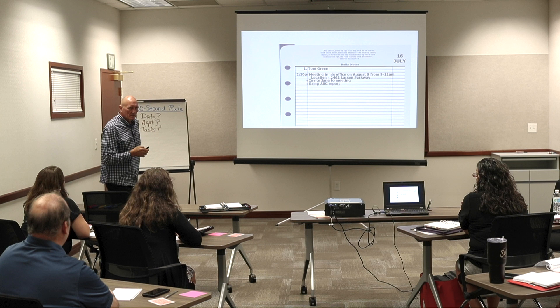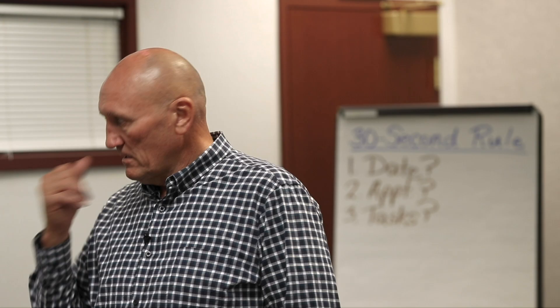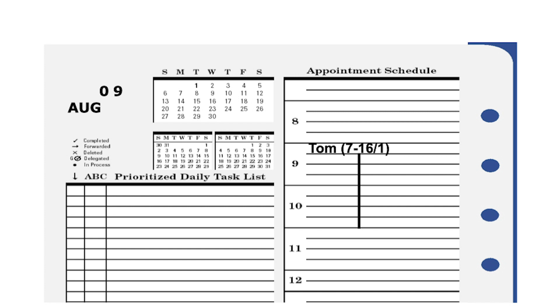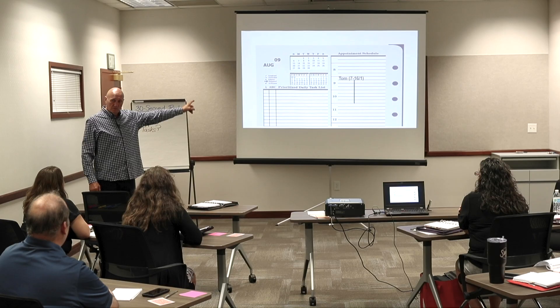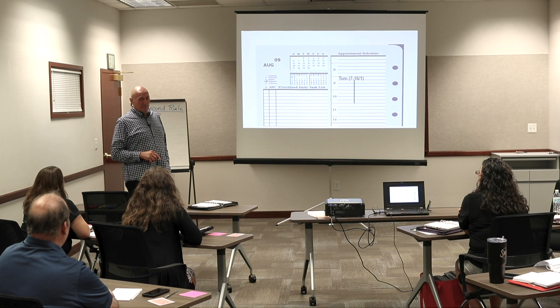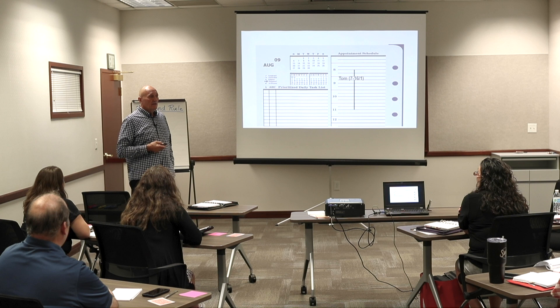I have three months in my planner — the current month, the previous month to reference back to, and a month ahead to plan into. So August pages are right there. I go out and write Tom at 9 o'clock, block out the two hours of the meeting, referencing back to July 16th. Tom's office is almost a half hour away, so I also block out a half hour before and after for travel time.